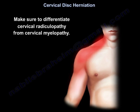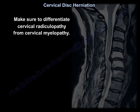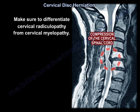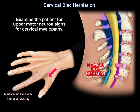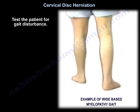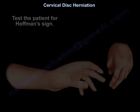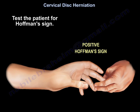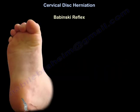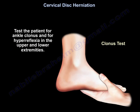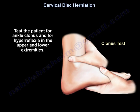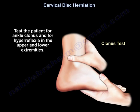Make sure you differentiate cervical radiculopathy from myelopathy. Examine the patient for upper motor neuron signs of cervical myelopathy: gait disturbance, Hoffmann's sign, Babinski reflex, ankle clonus, and hyperreflexia in the upper and lower extremities.